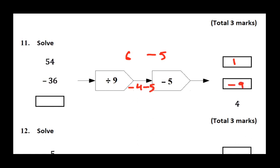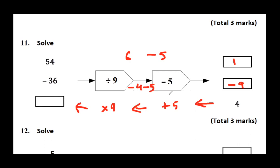Third part: the output is given. Whenever the output is given, we do the inverse operation in the function machine. Inverse of subtract 5 is plus 5, and inverse of divide by 9 is times by 9. So if the output is 4, we add 5 — which is the inverse of subtract 5 — giving 9. Then 9 times 9 gives 81.